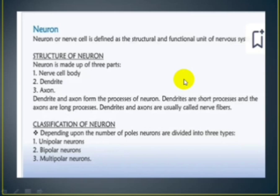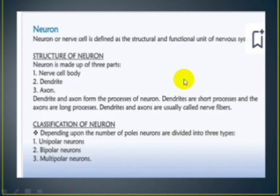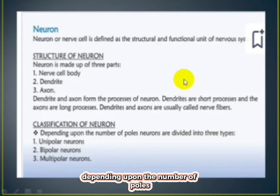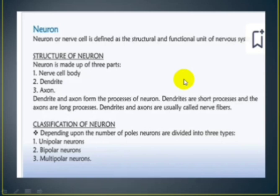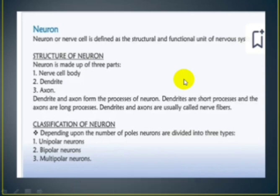Going forward, the neurons can be classified depending upon the number of processes. We have anatomical classifications and we also have physiological classifications.